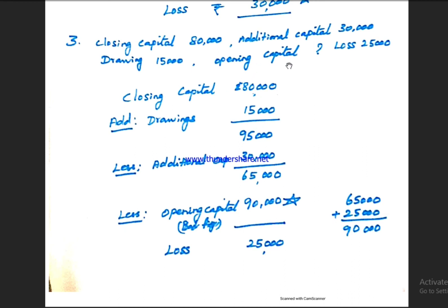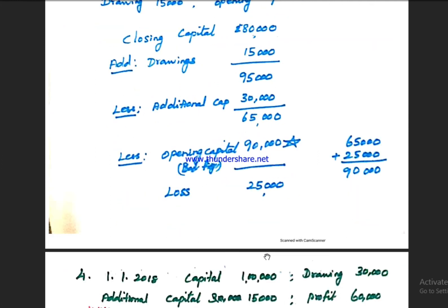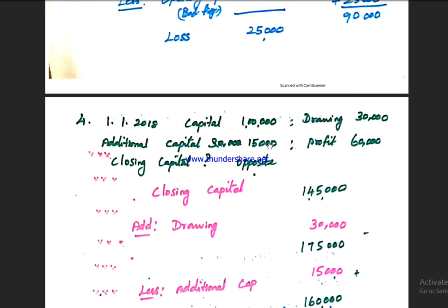Looking at Exercise 4: closing capital is 95,000. Add drawings 30,000, less additional capital 15,000. Profit for the year is 60,000. The opening capital can be derived by working backward from these figures using the Statement of Profit or Loss formula.